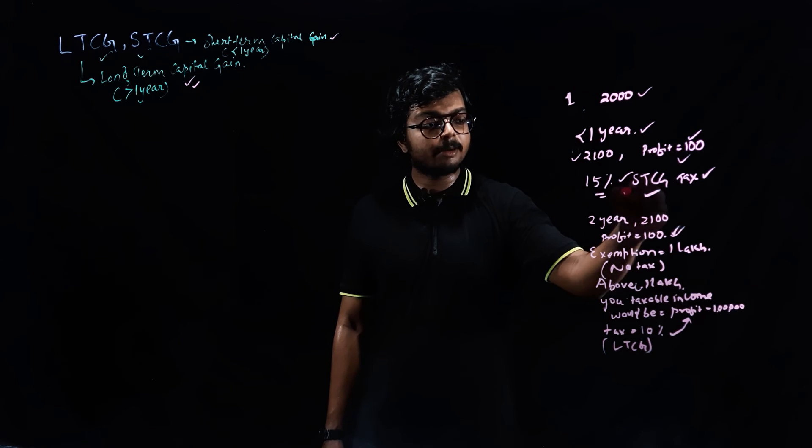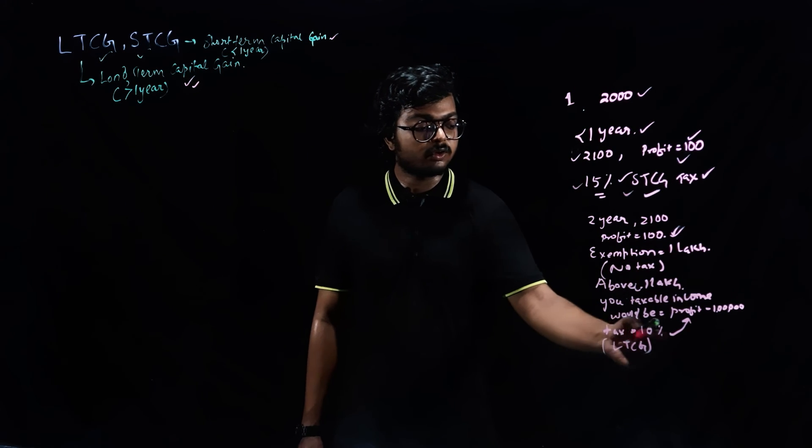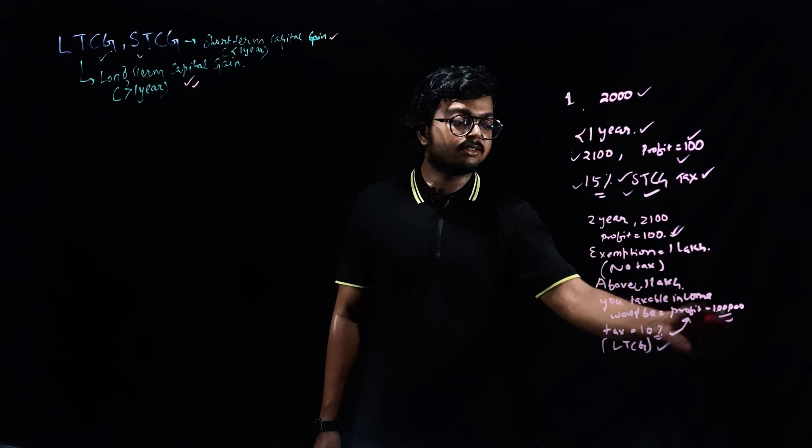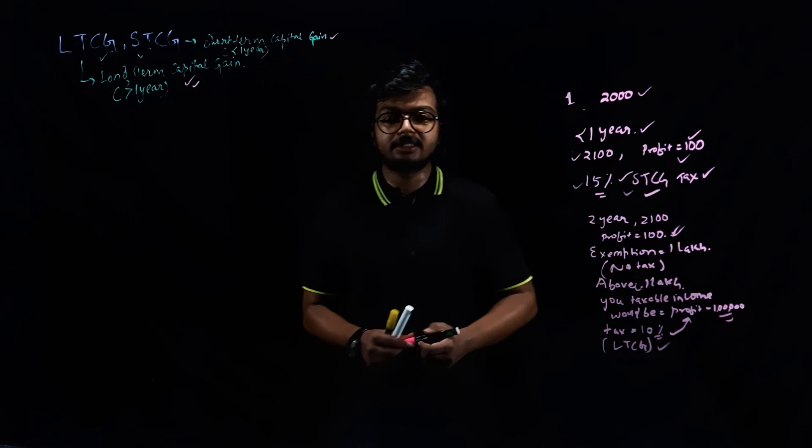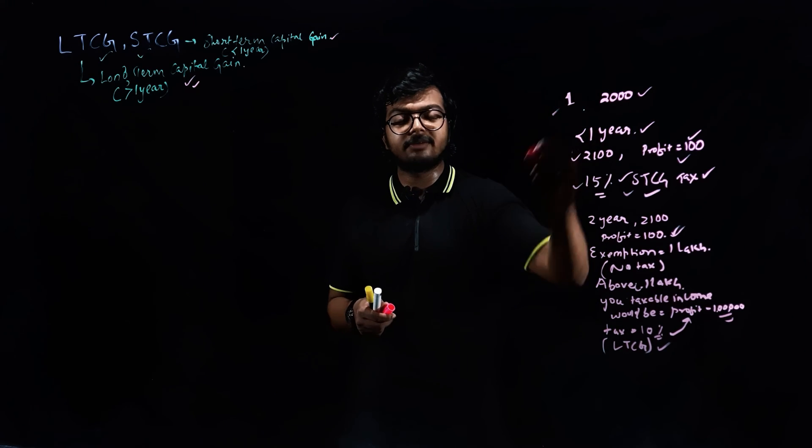So, if you are making short term capital gain, then you have to pay straightforward 15%. And in case of long term capital gain, your tax would be 10% after exemption of this one lakh rupees. Remember this, this is very important. And as you are playing in stock market, you should know this basic difference.